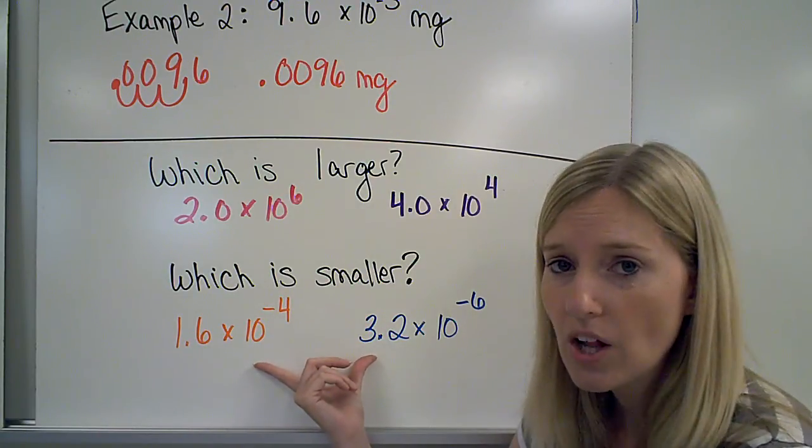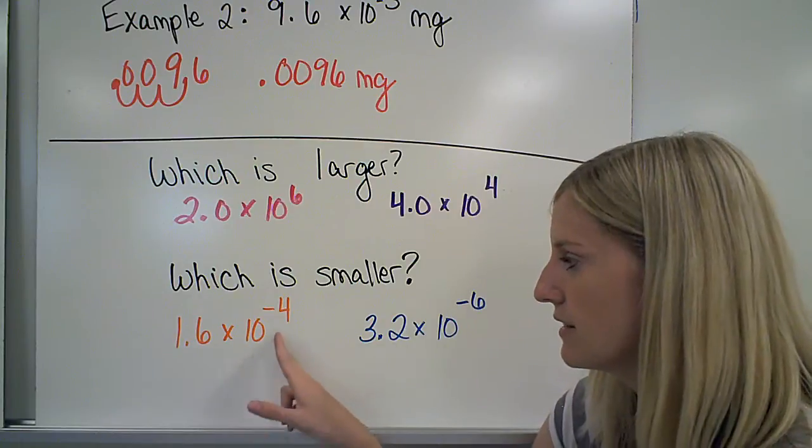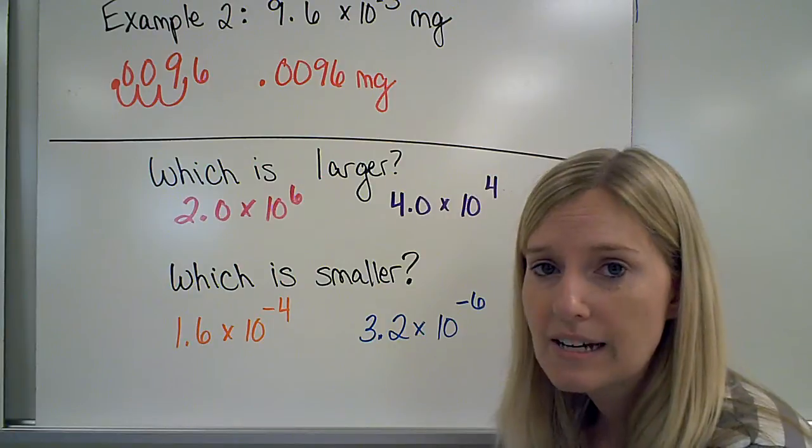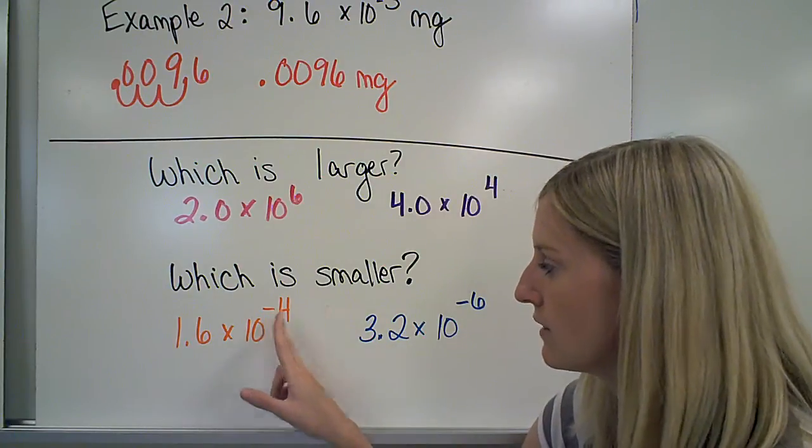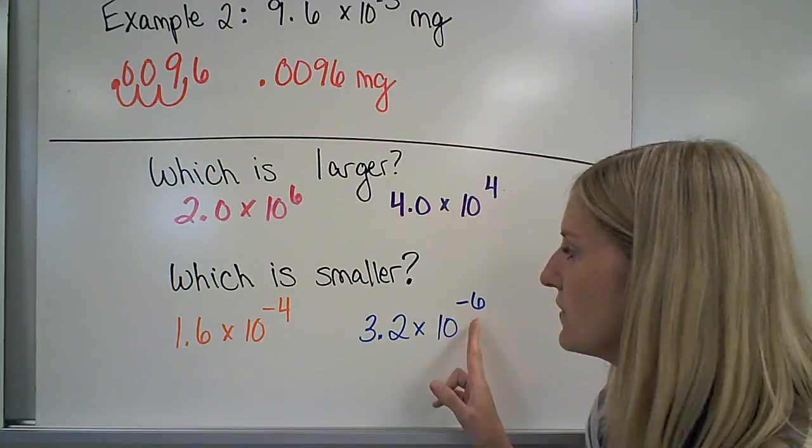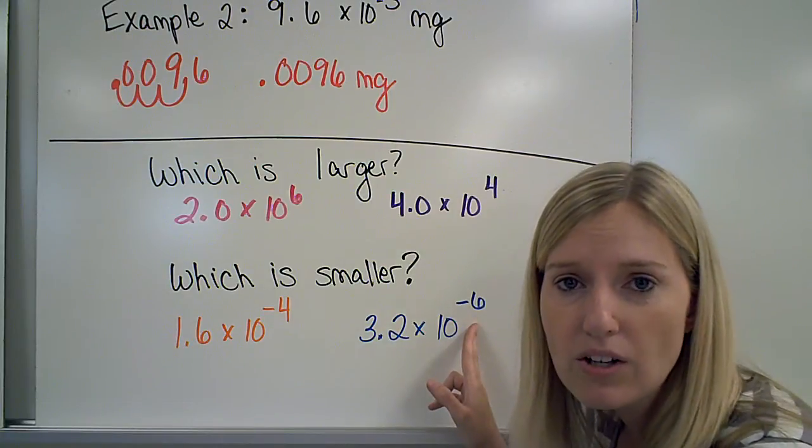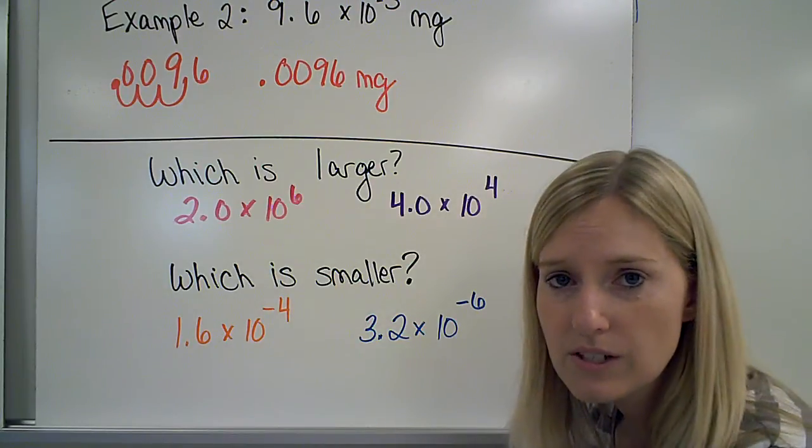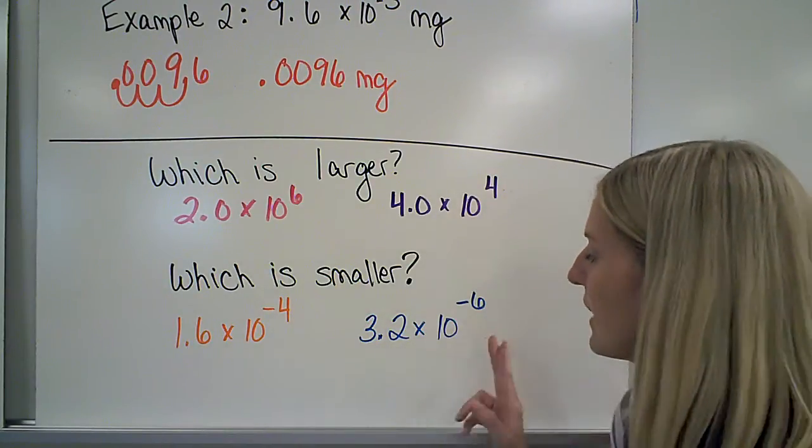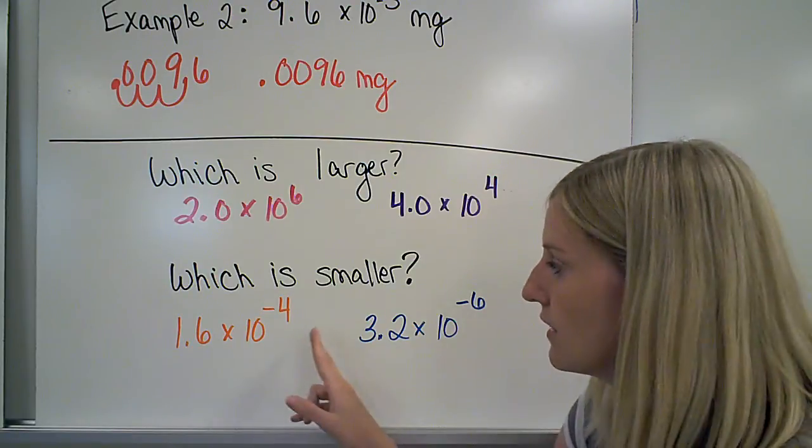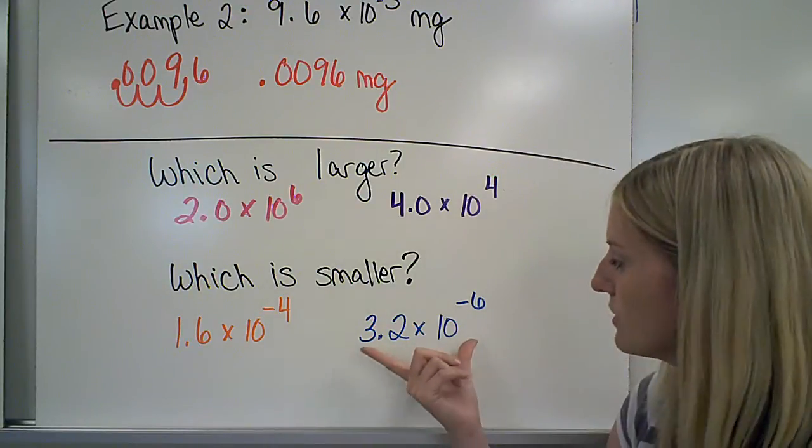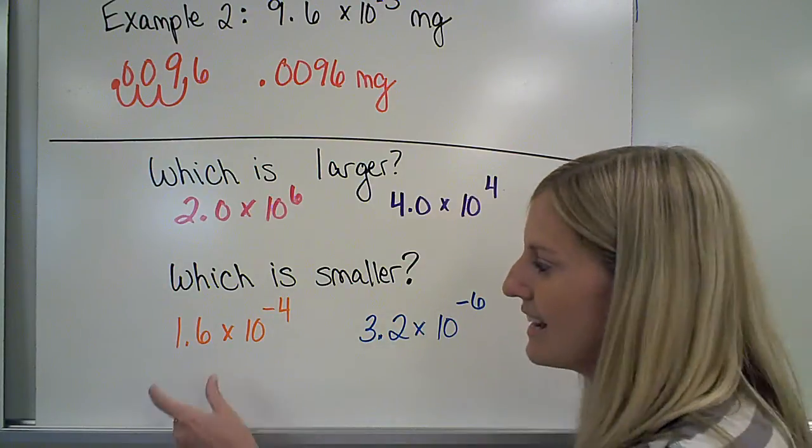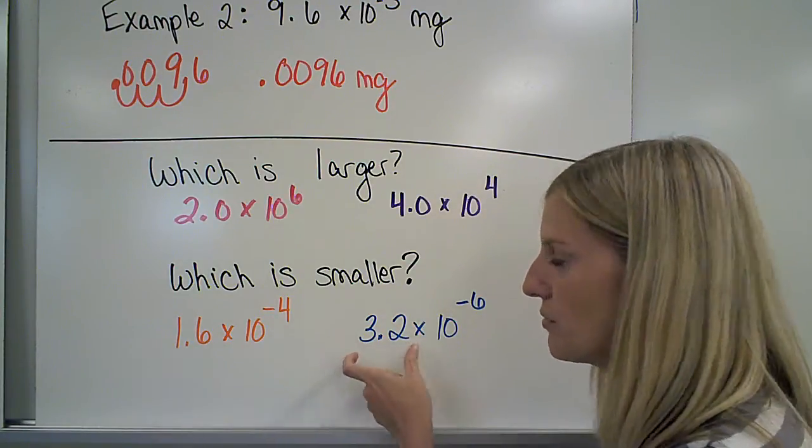Out of these two, which one of these would be smaller then? 1.6 times 10 to the negative 4, 3.2 times 10 to the negative 6. Well, same idea. Looking at those exponents, negative 4 and negative 6. Negative 6 is smaller because it's farther away from 0. So 6 was farther away from 0 than 4. And negative 6 is farther away than negative 4. So this number is smaller. Notice that in these cases, since they have different exponents, it doesn't even really matter what this 1 through 10 number is. It's the exponent that makes the largest amount of difference.